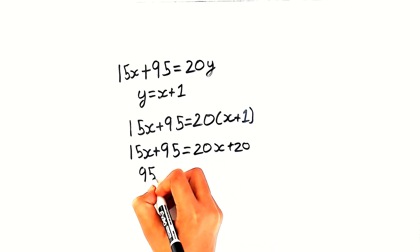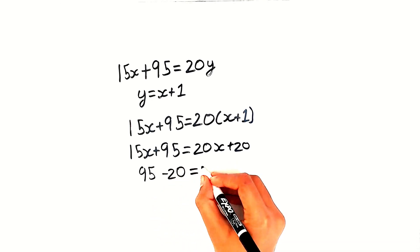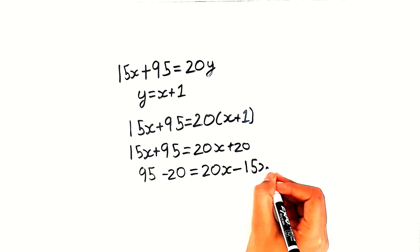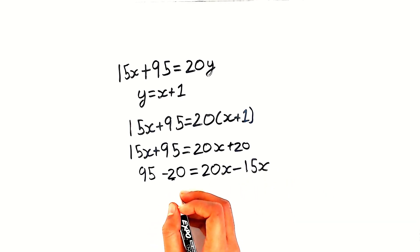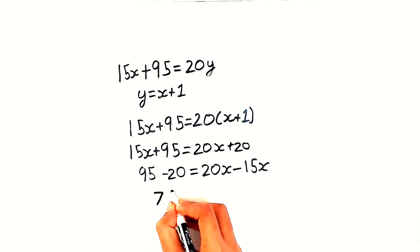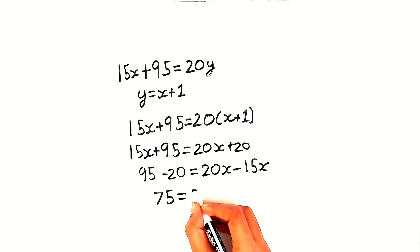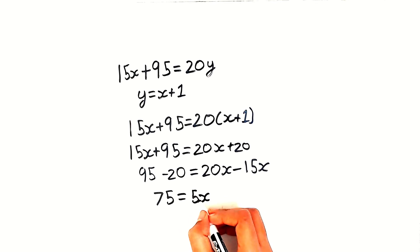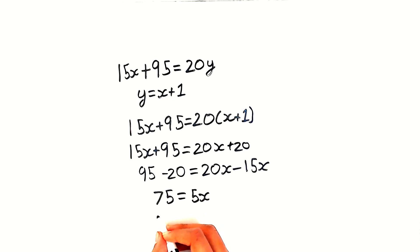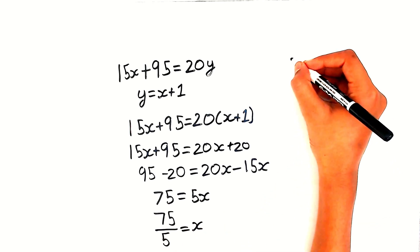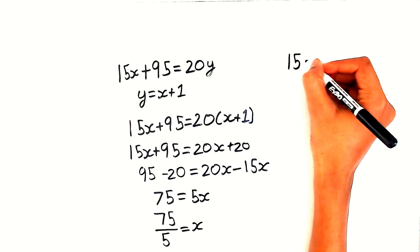So it'll be 95 minus 20 equals 20x minus 15x. Here 95 minus 20 equals 75, and 20x minus 15x equals 5x. Now let's move the times 5 over here, so we divide by 5. So it'll be 75 divided by 5 equals x. Here 75 divided by 5 equals 15. So that means 15 equals x.